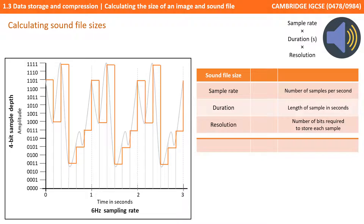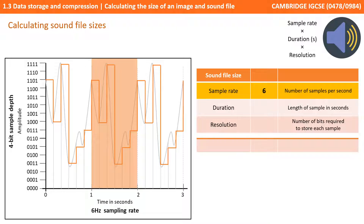Let's work through an actual sound file example. To work out the size of a sound file we need to do: sample rate times duration in seconds times resolution. We'll start with the sample rate — that's the number of times the sound file is being sampled in a second. You can see here we've got three seconds along the bottom, and in each given second it's being sampled six times — those are the vertical grey lines. So we have a sample rate of six, six samples being taken per second.